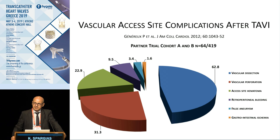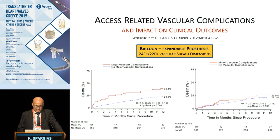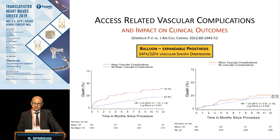From the Partner trial, we have this breakdown of the frequency of these complications. Number one, as you can see, was vascular dissection, then vascular perforation, and access site hematoma. But that was with very large sheaths we were using at that time, and they are very low compared to those numbers today. Major vascular complications have a tremendous effect on mortality — they double or even triple mortality when they occur.